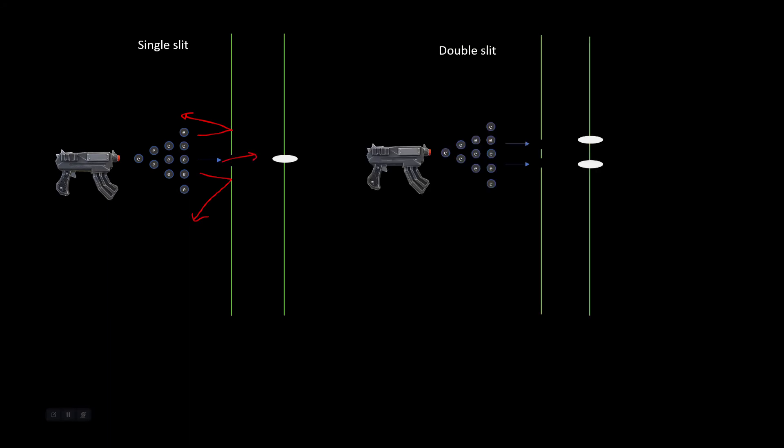In the double-slit experiment with electrons, we expect the same to happen where these particle objects will bounce off the screen, and wherever there is the slit, the electrons will go through and have two targets associated in the back screen.